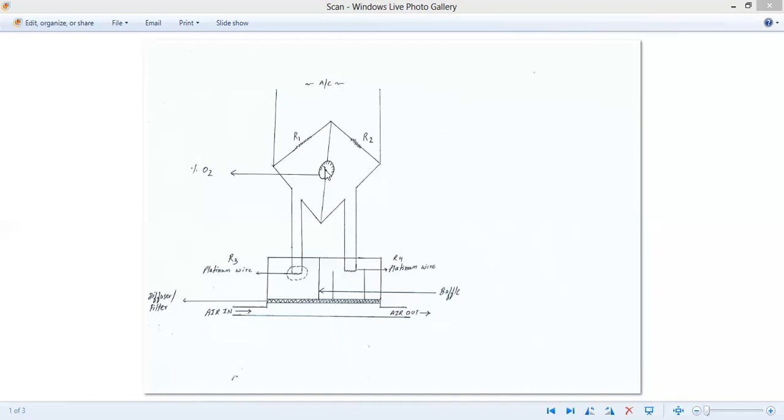Let's see how. In this diagram, this is a galvanometer which shows the percentage of oxygen. These are four resistances: R1, R2, R3, R4. There is a platinum wire here in resistance R3 and a platinum wire here in resistance R4. This is a diffuser or filter, and this is a baffle between these two chambers. This is the point from where air is withdrawn or drawn into this gas meter, and air is given out here.